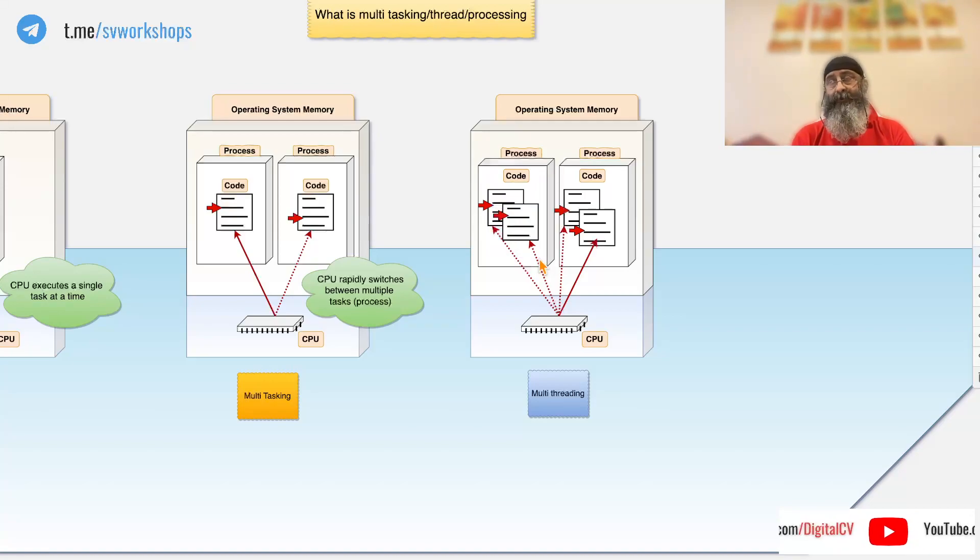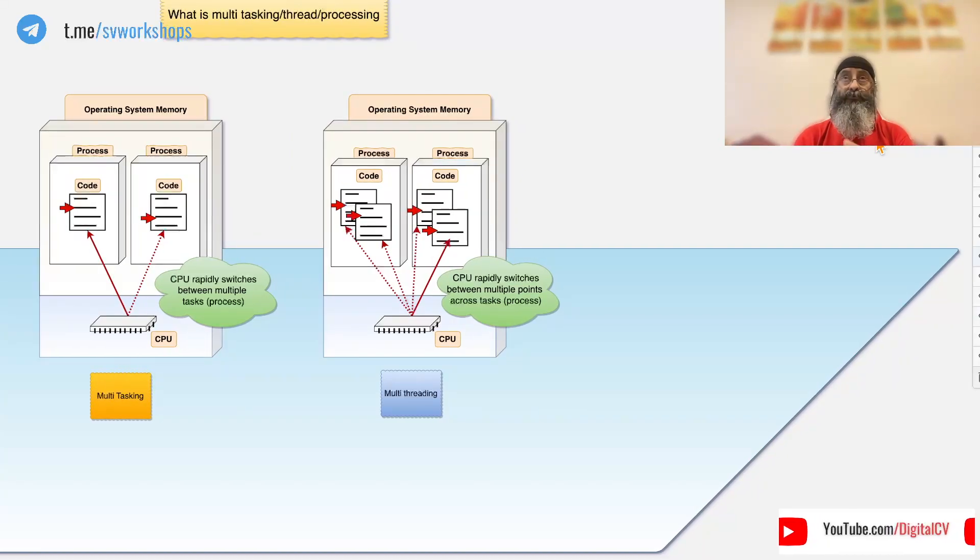Now, imagine that on each table you have different people sitting, different customers. Now he has to switch not only between tables, he has to switch between customers sitting across the table. Does it improve the performance with a single CPU? Probably not because now it is running between multiple customers. So multi-threading is the ability to allow the CPU to switch between multiple points of execution rather than just processes.